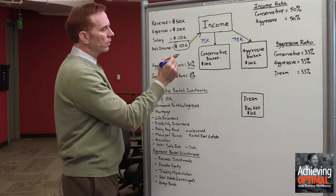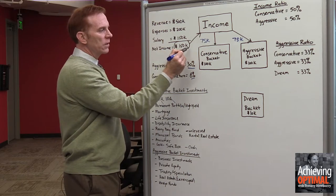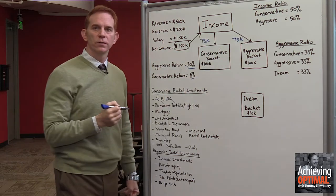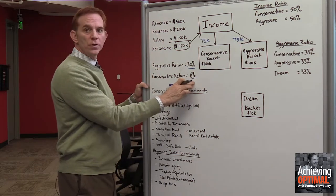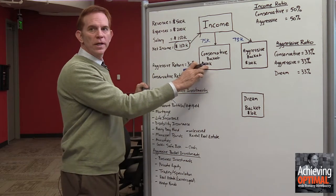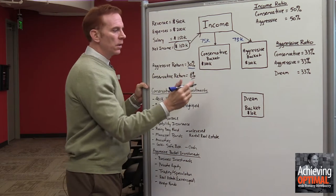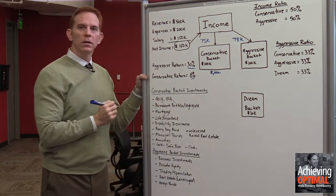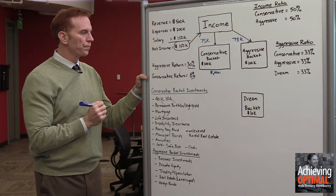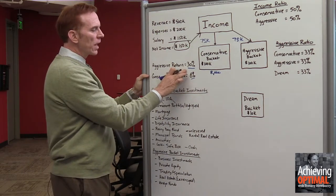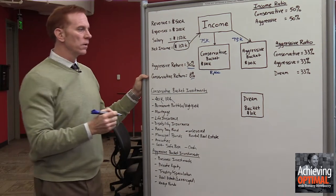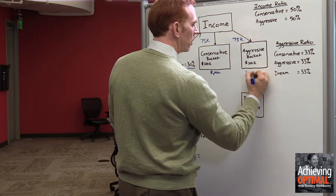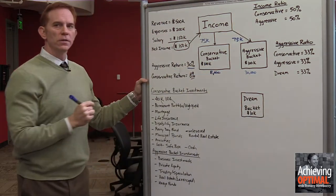At the end of the year, we have $150,000 in income: $75,000 goes conservative, $75,000 goes aggressive. We also generated an 8% return in our conservative bucket on $100,000 in capital, giving us an $8,000 return in that bucket. We also got a 30% return off the aggressive bucket, meaning we had $100,000 in that bucket and generated $30,000 in return there.